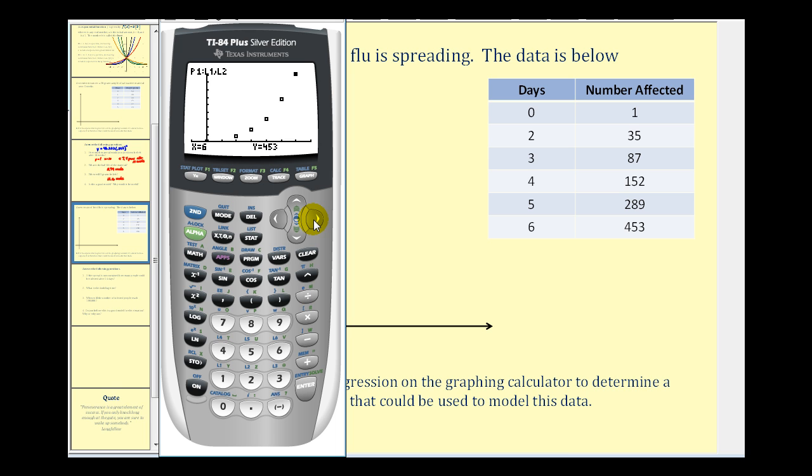Now before we perform the regression, we want to make sure the calculator gives us R squared, or the coefficient of determination. So we need to make sure the diagnostic tool is turned on. If we press second, zero, brings up the catalog, and now we'll scroll down to D and look for diagnostic on. Here it is, so we'll press enter, and then enter one more time.